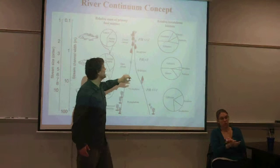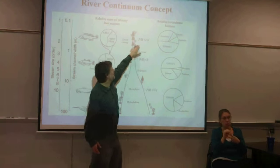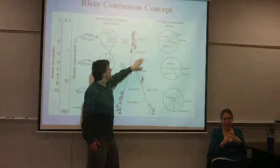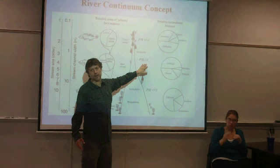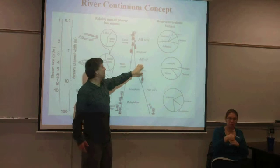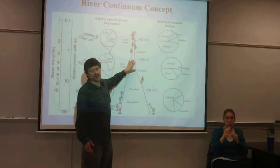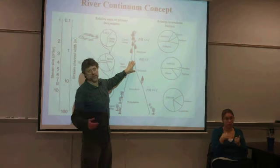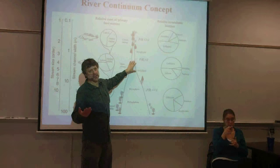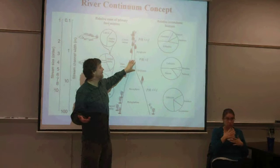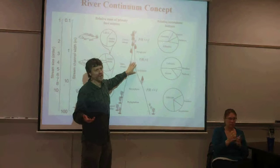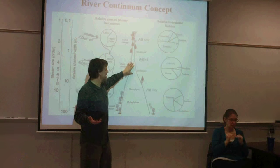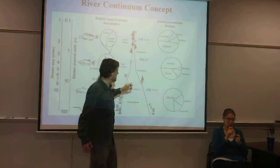When they drew this, they had P to R being less than 1 in the upper reaches and P to R being greater than 1 in the mid-reaches. Now we know that GPP is less than respiration, but not as much — the balance is not changed as much.